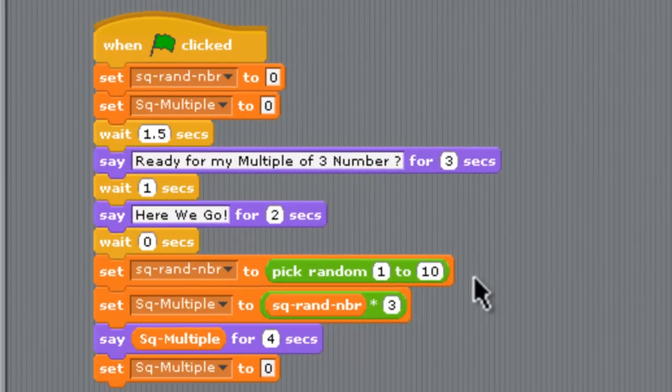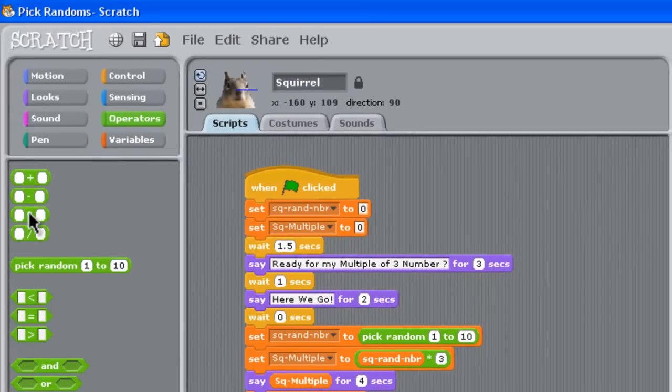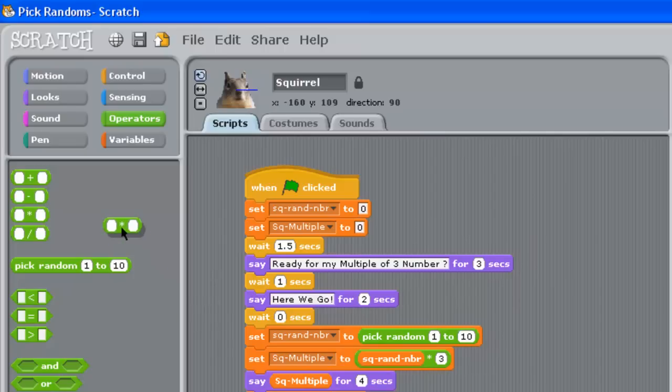The random number he picks is between 1 and 10, not between 1 and 20, and then we set the squirrel multiple to his random number, whatever it was between 1 and 10, and times that by 3. There's a little asterisk in there. So we pulled that out of the operator green blocks up here on the left, the timesing one, and brought that in to the set command.